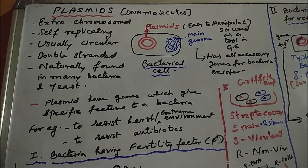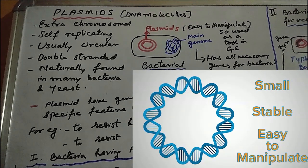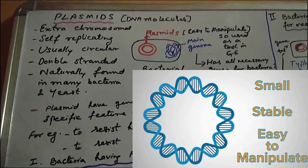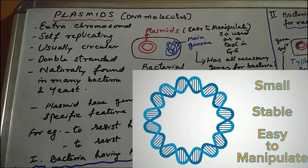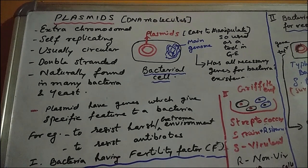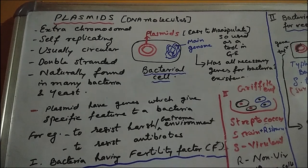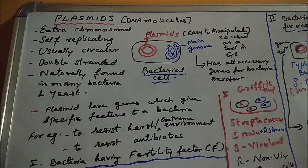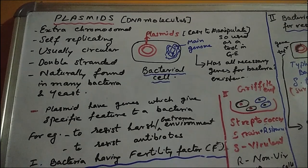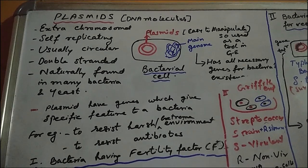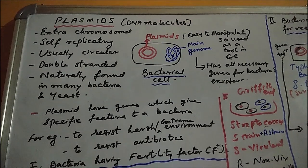Plasmids need not depend on the main genome for replication; they have the feature of self-replication. They are usually circular, generally double-stranded — two strands — and helical of course, just like a DNA helix, with the same bases A, T, G, C. For convenience we draw them simply. They are naturally found in many bacteria and yeast. Each term in the definition is important: extrachromosomal, self-replicating, and that is one main reason why we use plasmids in cloning.